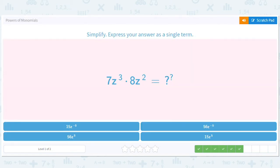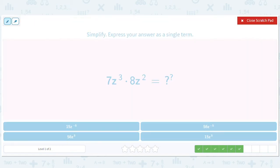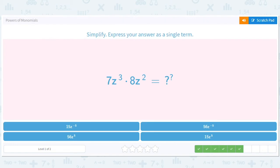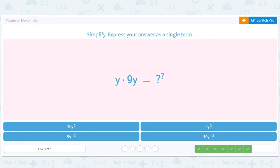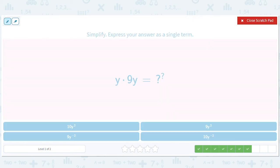Okay, 56. Eight times seven is 56. This is Z to the three plus two. So it should be 56Z to the fifth. And I think the point of this is to help you guys understand when you multiply, when you add. Algebra is all about reps. Unfortunately, there's no way around it. You just have to do a lot of practice.